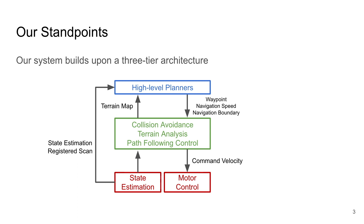The bottom tier provides state estimation and motor control that interfaces with sensors and actuators. The middle tier contains navigation modules necessary for safe navigation. High-level planners operate at the top tier and interact with the middle tier by sending high-level navigation goals. Our work provides navigation modules at the middle tier including collision avoidance, terrain analysis, and path-following control.